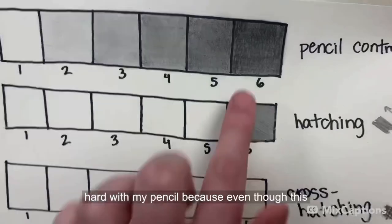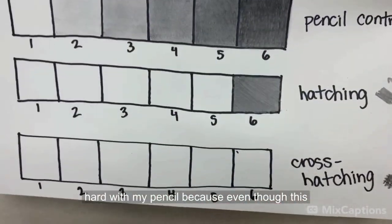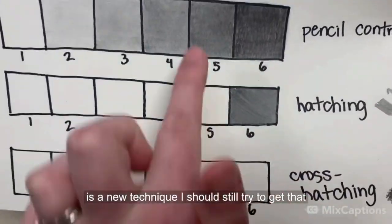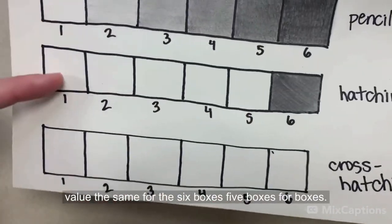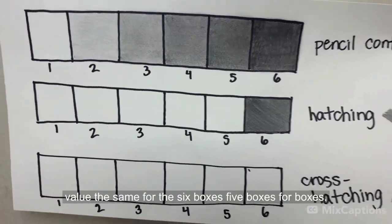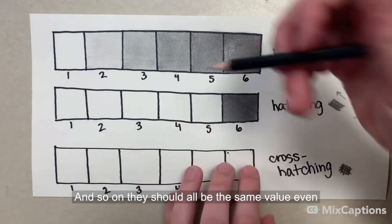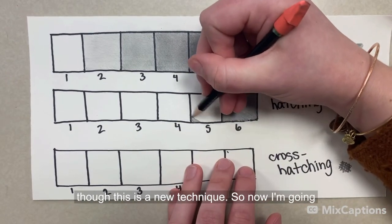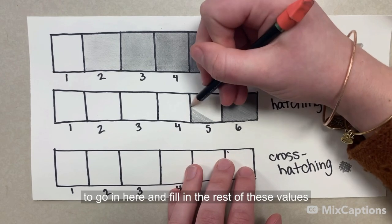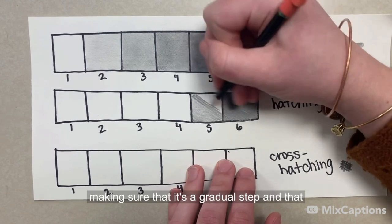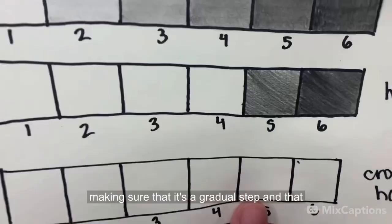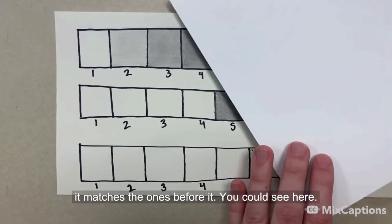Now I pressed really hard with my pencil because even though this is a new technique, I should still try to get that value the same for the six boxes, five boxes, four boxes, and so on. They should all be the same value even though this is a new technique. So now I'm going to go in here and fill in the rest of these values making sure that it's a gradual step and that it matches the ones before it.